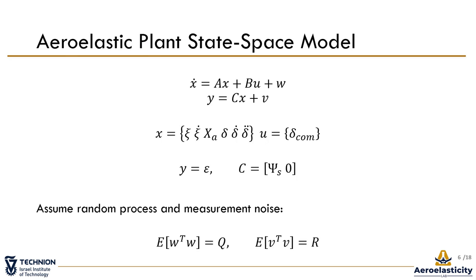For flexible wings, the dynamic model is based on the aeroelastic plant state space. The state vector includes the modal displacements and velocities, aerodynamic lag terms, and the control surface deflections and their time derivatives. The state and input matrices A and B can be computed for nominal airspeed using aeroelastic software. The output matrix C is defined by the strain modes at the sensing points. We will see next whether and how different mode sets in matrix C affect the estimation.